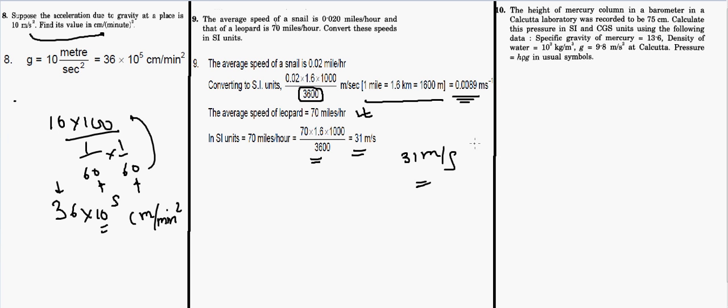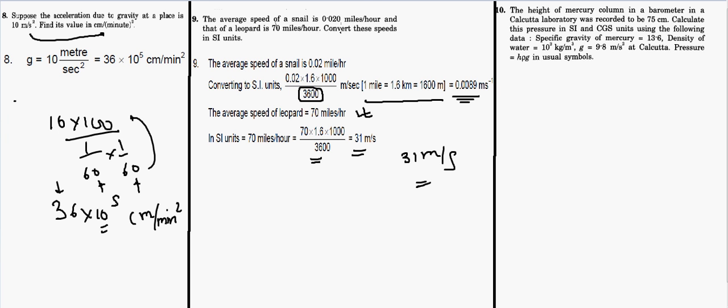A mercury column in a barometer at a Kolkata laboratory is 75 cm. Calculate pressure in SI and CGS units using: specific gravity of mercury = 13.6, density of water = 10³ kg/m³, g = 9.8 m/s². The pressure formula is P = ρgh.